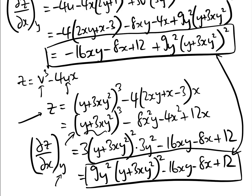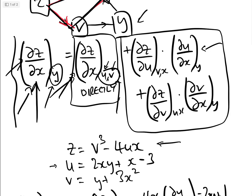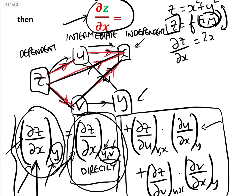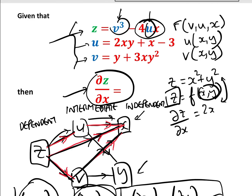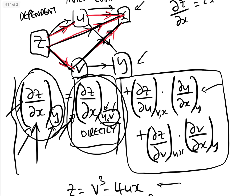So the key lessons here are: use the chain rule for partial differentiation, and be careful about what you're keeping constant — are you keeping the other independent variable constant, or the intermediate variables constant? The total differential of z with respect to x is the direct contribution of x plus the indirect contributions from the intermediate variables. I hope that's clarified some confusion — if it has, please like this video and subscribe to the Gresti Academy YouTube channel. Thank you.